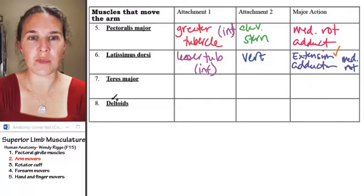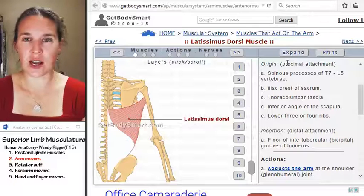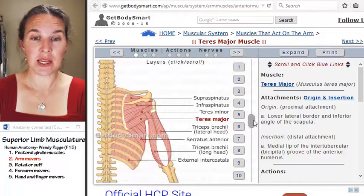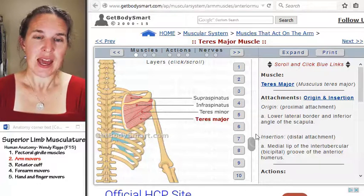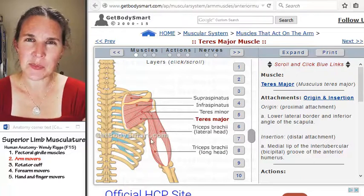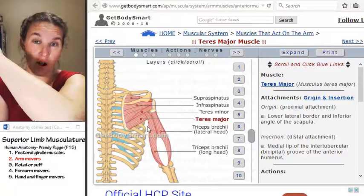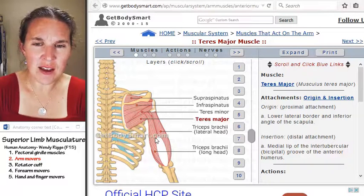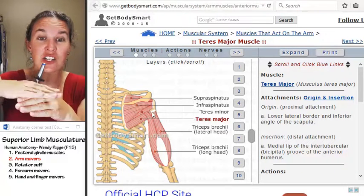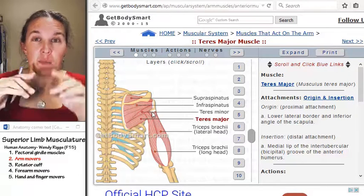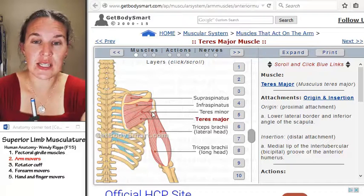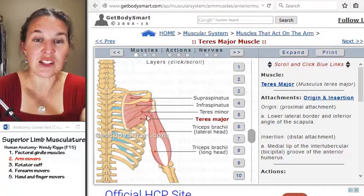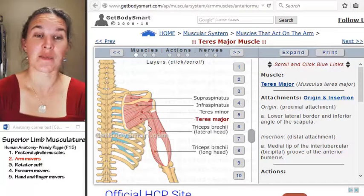The other guy that makes up the posterior portion of your armpit is teres major. Let's go check out teres major. Teres major, there's two tereses, and you're going to know both of them. Teres major is the inferior teres. This is triceps. Triceps brachii is the posterior muscle on your arm, and it actually is responsible for forearm extension. But the long head of triceps brachii attaches to the scapula between teres major and teres minor.